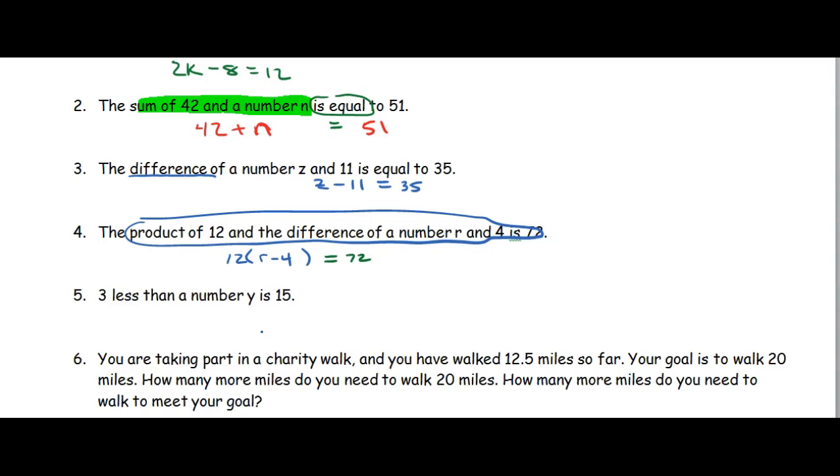Number 5, 3 less than a number y is 5. Now, less than, this is the only tough one, I think, because the order does matter, because less than tells us subtraction. But you have to think of it, you have to be less than something. So what are we starting with? Are we starting with 3 or y? Well, you're 3 less than y, which means you're starting with y.